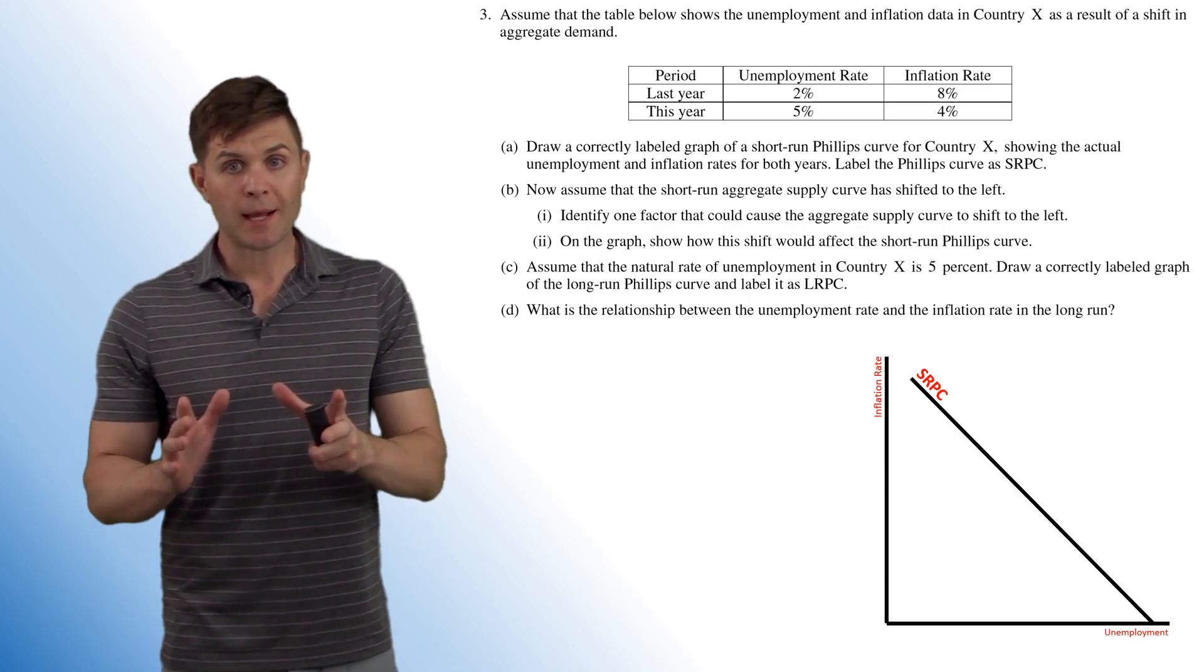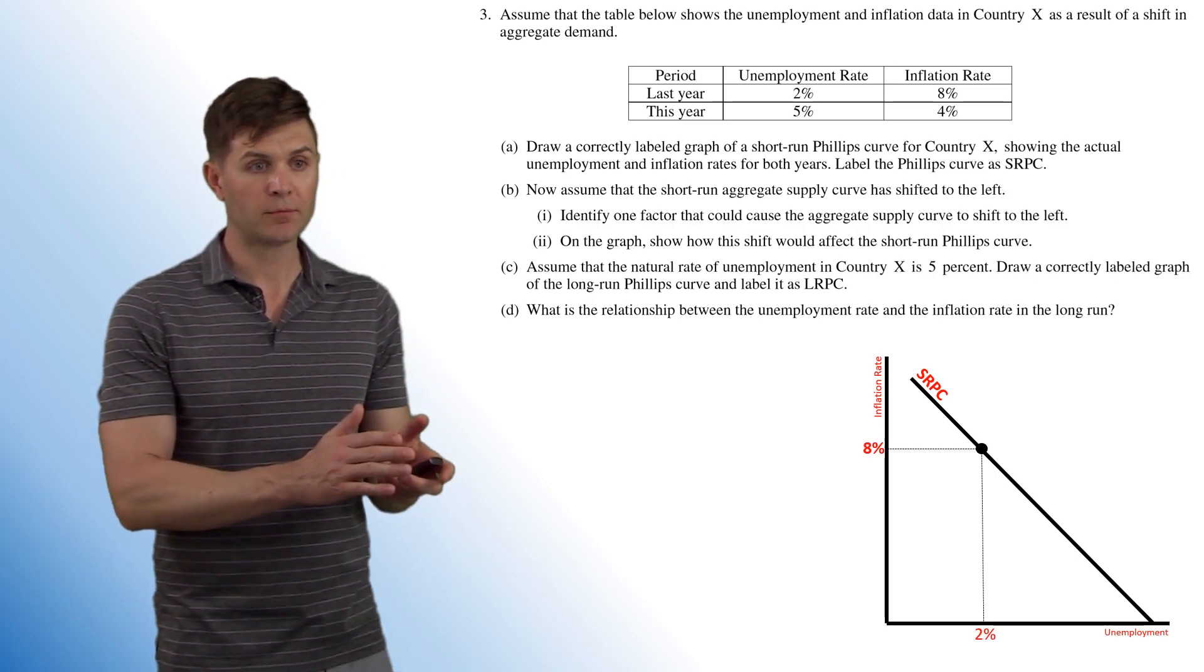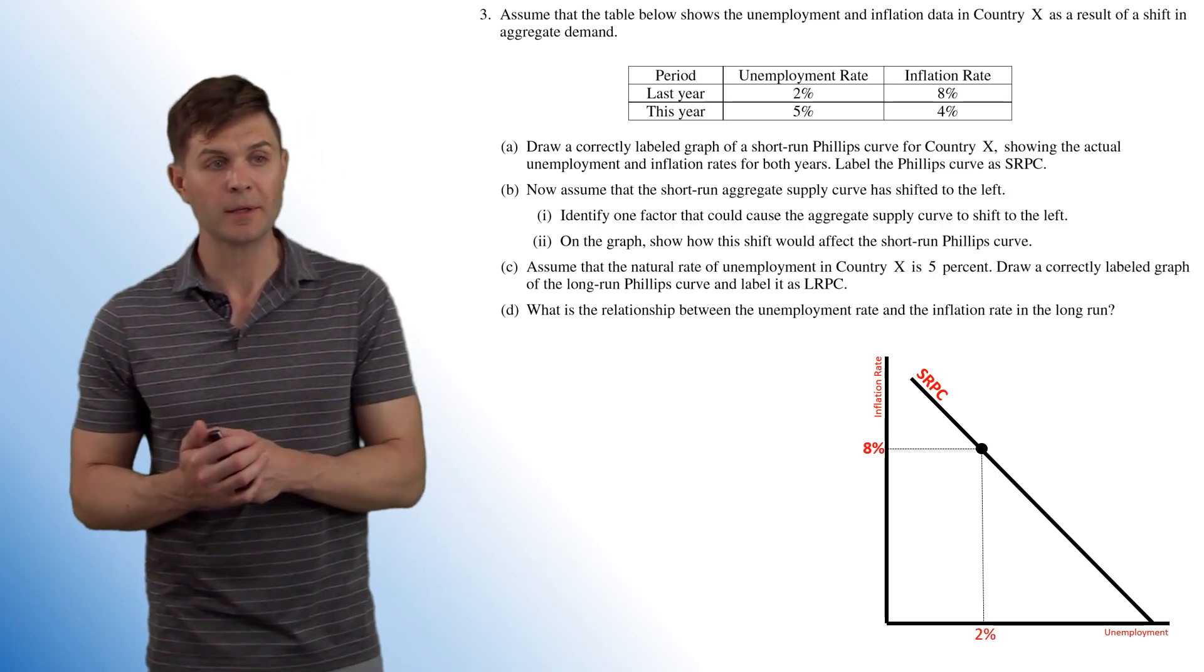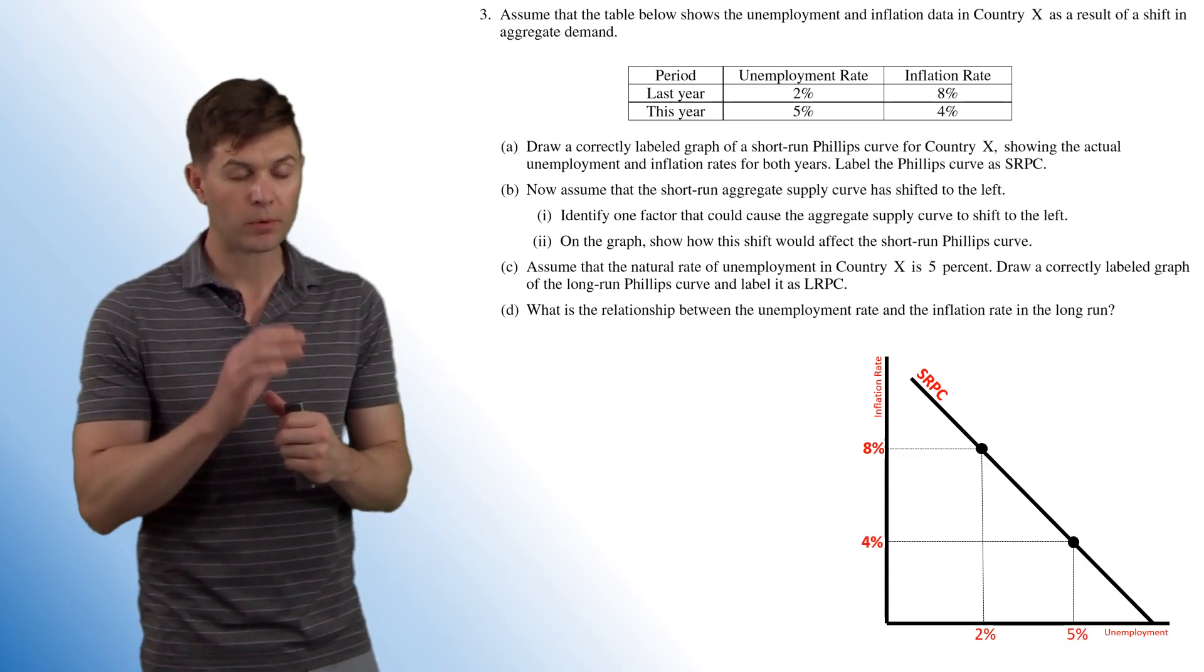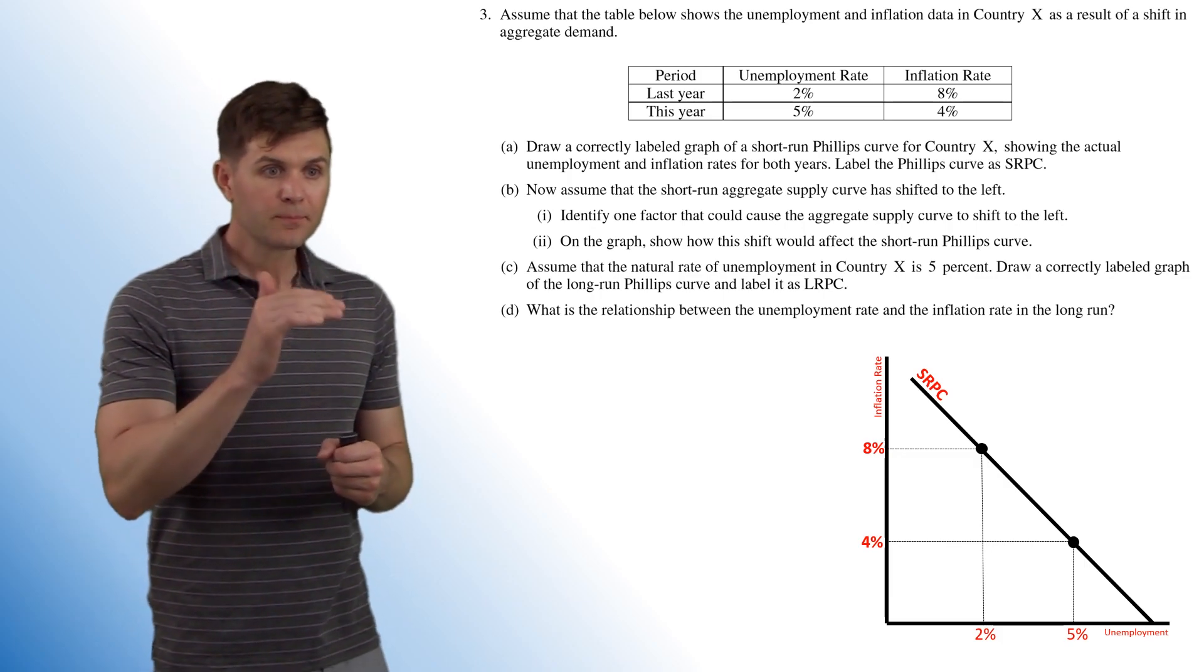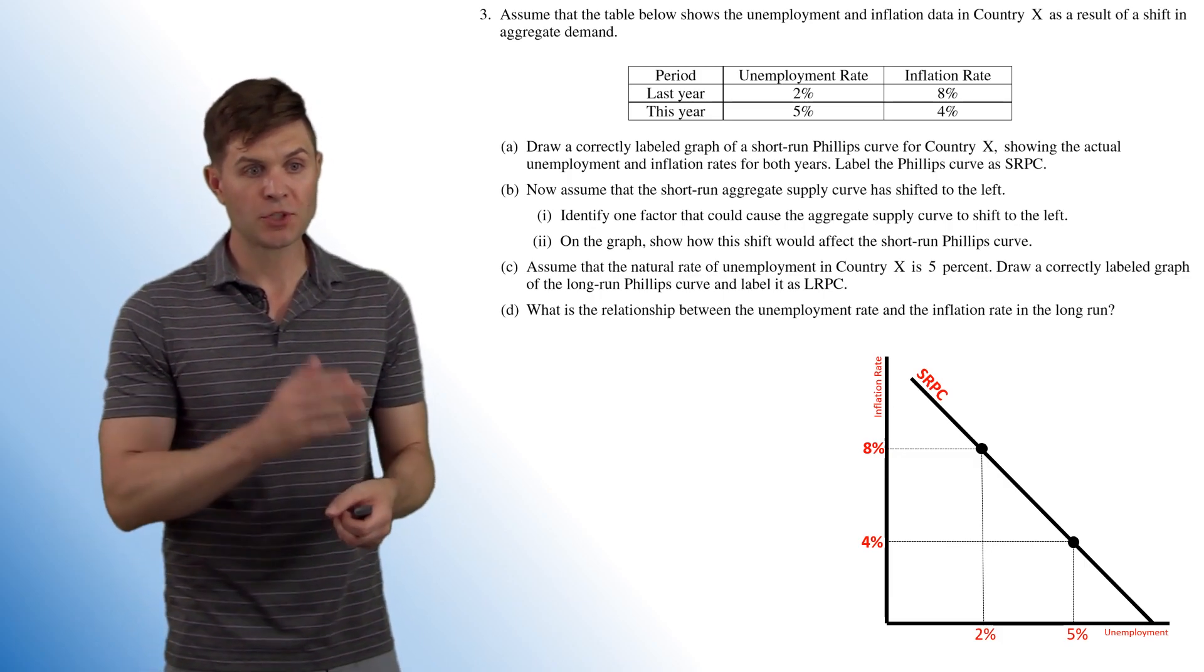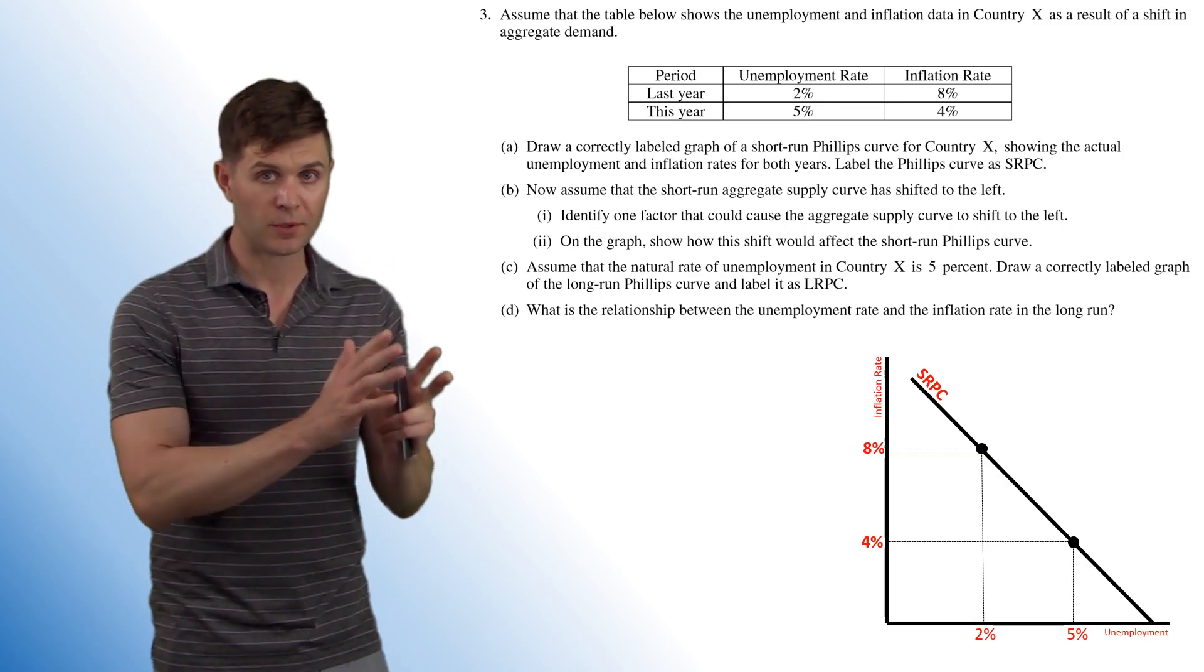Now we have to plot the points. So last year's unemployment and inflation rate, 8% inflation, 2% unemployment. We have the demand change and all of a sudden our data shifts to a new point down the curve, and we've got 4% inflation and 5% unemployment. So make sure you plot those points correctly and you're in the right column or row on that table when you're doing this stuff.